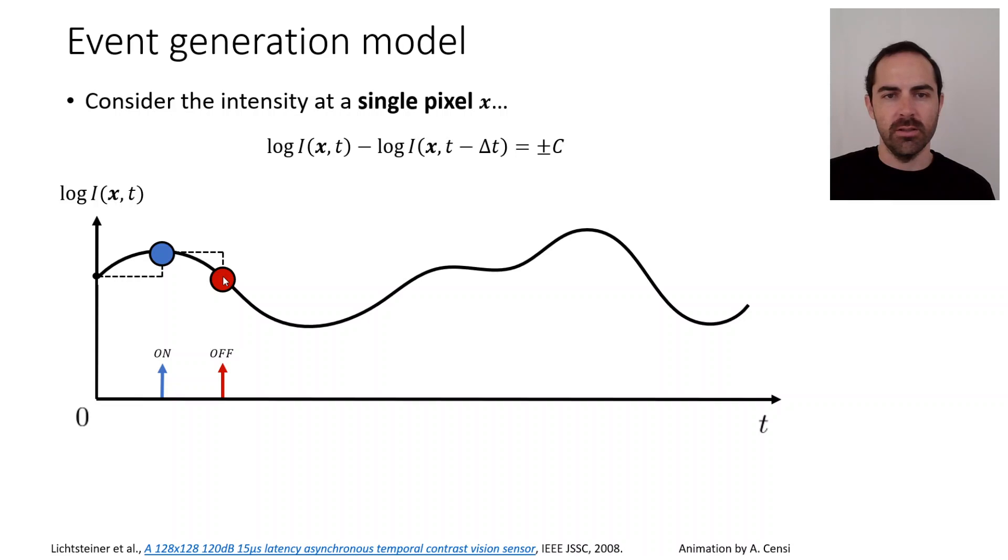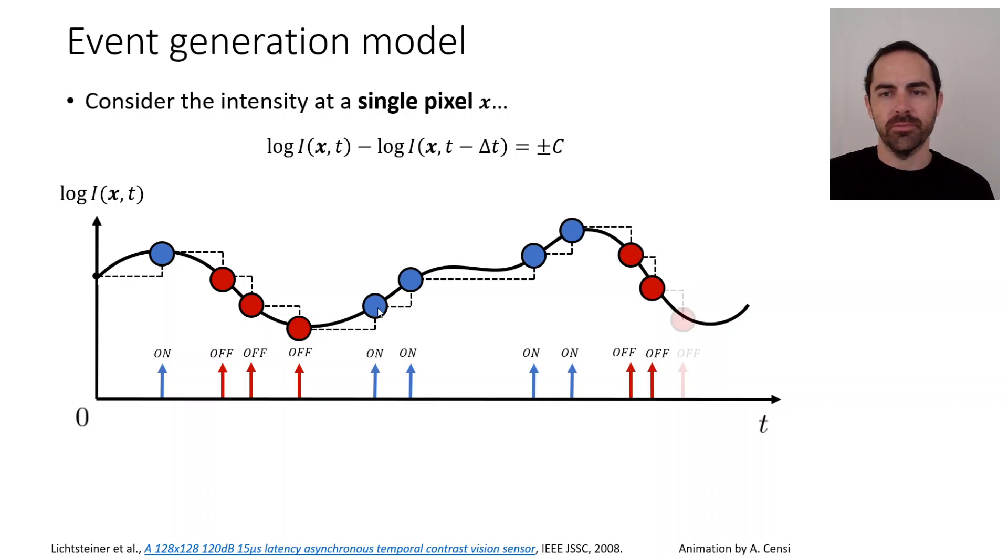Then what happens next is that brightness or intensity decreases by this same amount c, and therefore we have an off event. It keeps on decreasing, off event, off event. Now it increases, we have an on event, and so on.